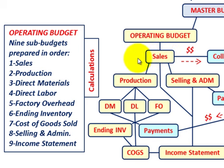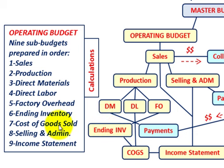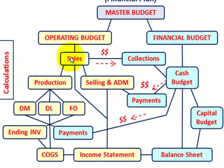The nine operating sub-budgets in order are: number one, sales; number two, production; number three, direct materials; number four, direct labor; number five, factory overhead; number six, ending inventory; number seven, cost of goods sold; number eight, selling and administrative; and number nine, the income statement. Everything is integrated — we start with the sales budget before planning all other activities.